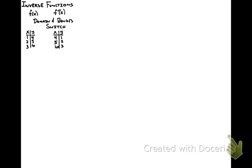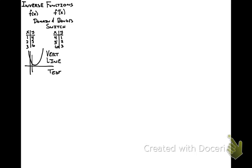That's a big relationship between a function and its inverse. The second important graphical fact is that something is a function if it passes the vertical line test. In a similar way, we can use what's called the horizontal line test to decide if a function has an inverse that is also a function. For example, x squared is a function — it passes the vertical line test — but it does not pass the horizontal line test. A horizontal line will intersect the graph at more than one point, so its inverse is not a function.